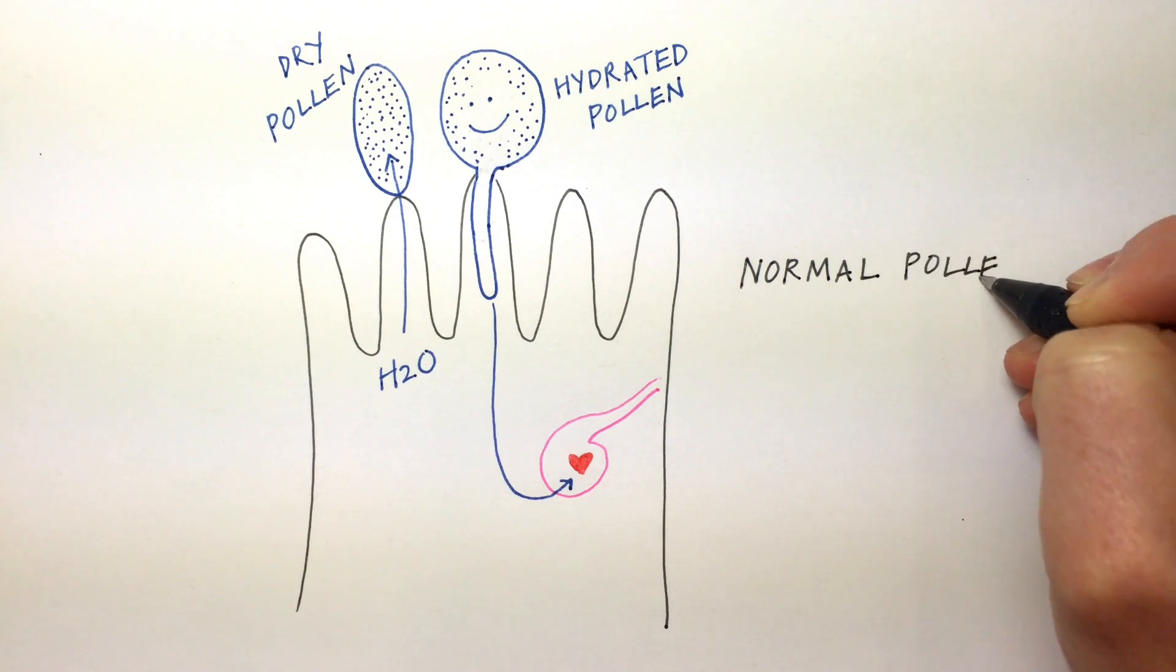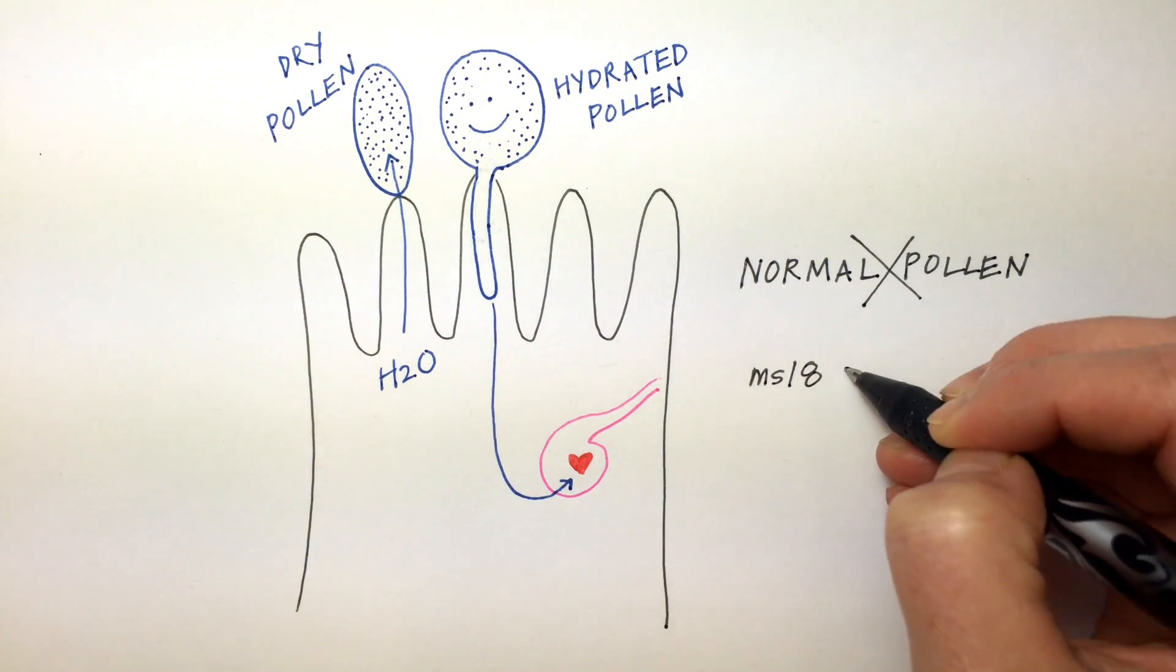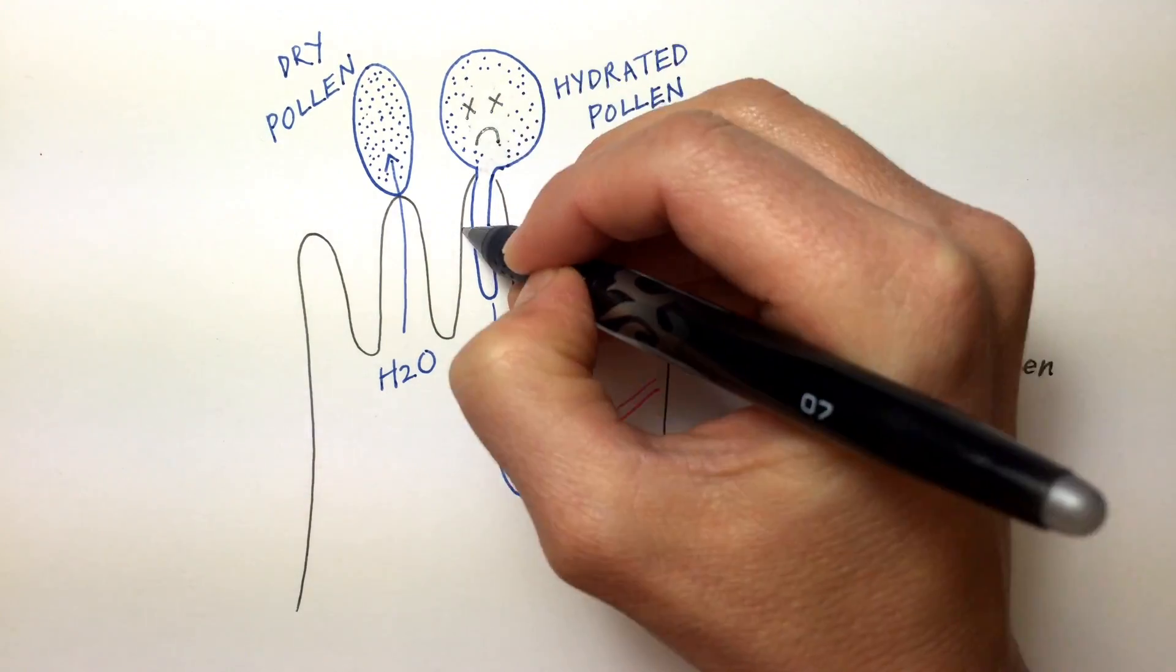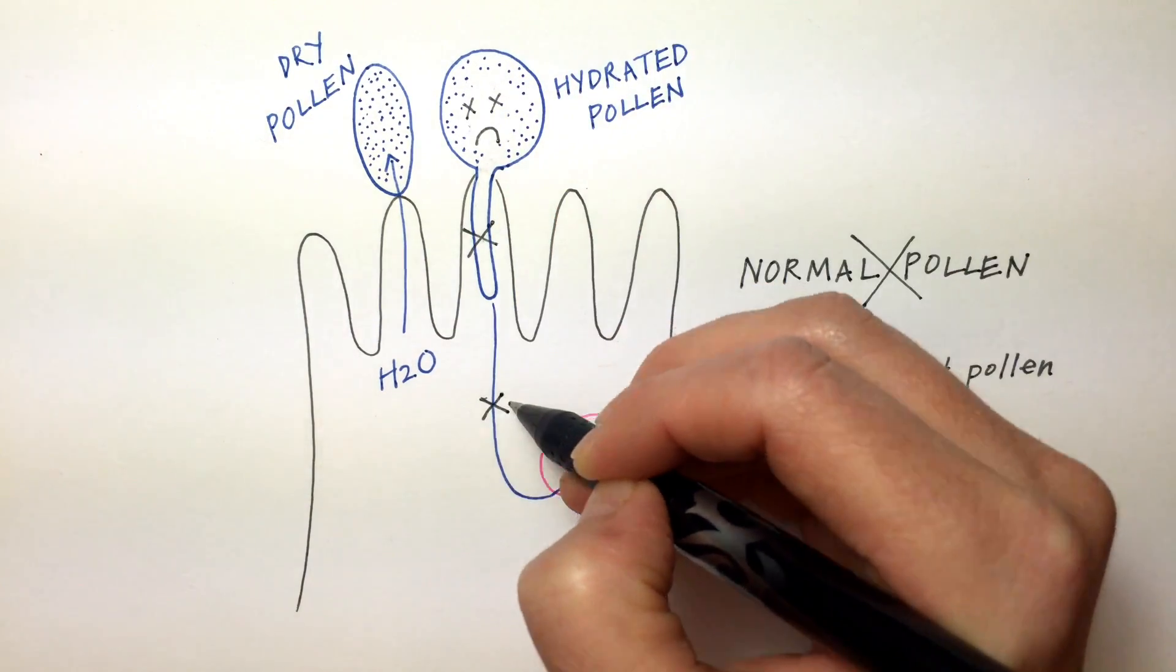This is what normally happens, but pollen missing a gene called MSL8 doesn't survive rehydration or pollen tube growth as well, meaning it produces fewer seeds.